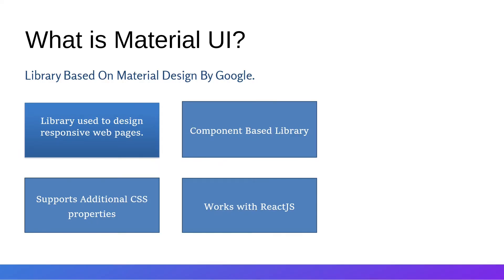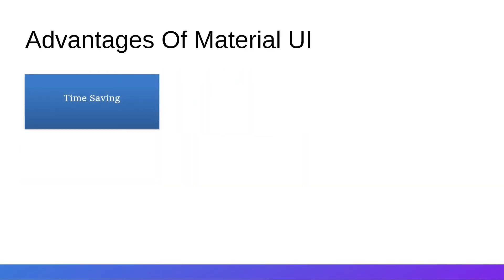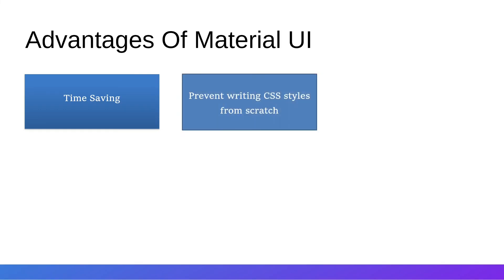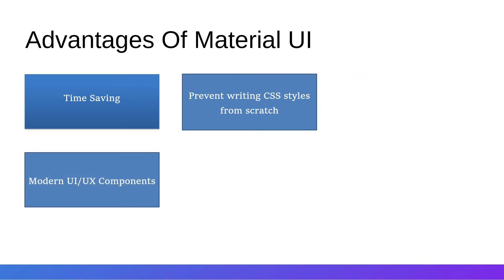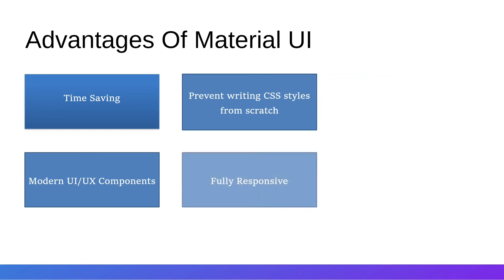The advantages of using Material UI are: first, it is time-saving because it has predefined components. Second, it prevents writing CSS styles from scratch — if you want to make a modern web page, Material UI handles that with its predefined components. Third, it has modern UI/UX components built in. And fourth, it is fully responsive out of the box.